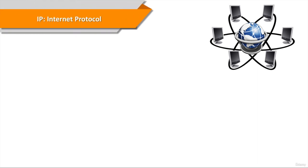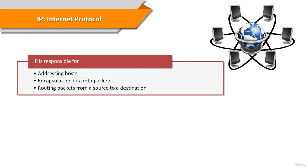Probably the most well-known network layer protocol is, of course, IP, or Internet Protocol. The Internet Protocol, or IP, is responsible for addressing hosts, encapsulating data into packets or datagrams, including fragmentation and reassembly, and routing packets from a source host to a destination host across one or more IP networks.